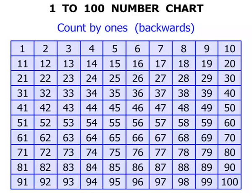Let's also look at counting by ones but this time backwards. So we started at 57: 56, 55, 54, 53, 52, 51, 50, 49, 48, 47, 46, 45. And again we could continue on as far as we needed to.